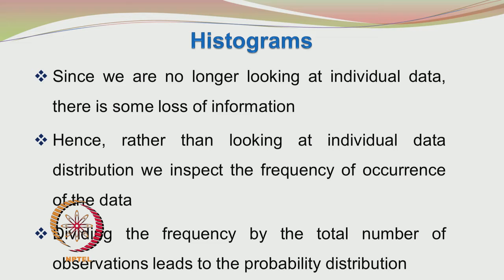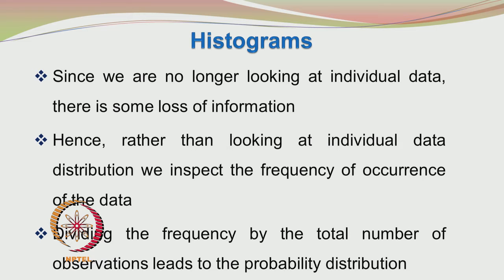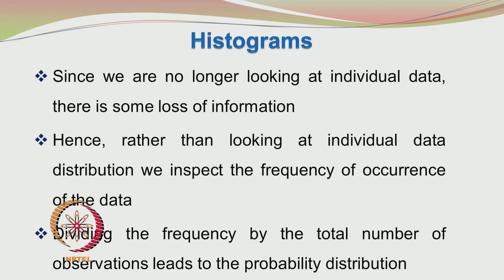A histogram compiles and combines sections of data before presentation, so there is some loss of information. You have to step back a bit to look at the overall picture and in doing so you may miss out on some of the finer points. Similarly, when you generate histograms, you tend to miss out on some individual data values. Rather than looking at individual data distribution, we inspect the frequency of occurrence of the data. Dividing the frequency by the total number of observations leads to the probability distribution.